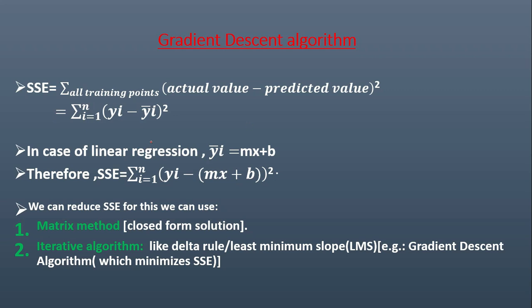Now, how can you represent this SSE? SSE can be represented as sigma i is equal to 1 to n, where n is all the training points, into yi minus yi bar, the whole square, where yi is the actual value and yi bar represents the predicted value.